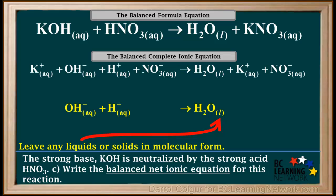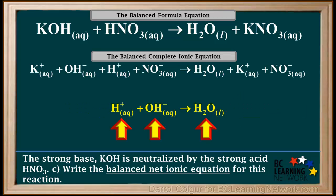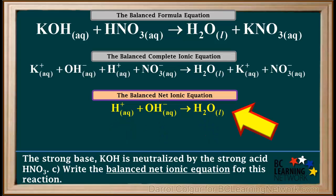Remember, because water is a molecular liquid, we leave it as a neutral molecule with the subscript L. Usually we start the net ionic equation with positive ions, so now we have H+ aqueous plus OH− aqueous forming H2O liquid. We've now completed the balanced net ionic equation for this neutralization. All strong acid–strong base neutralizations have this as the net ionic equation.